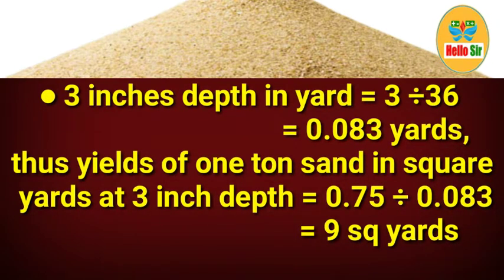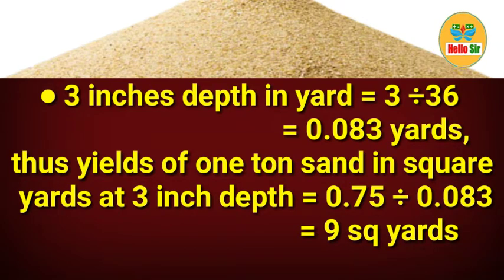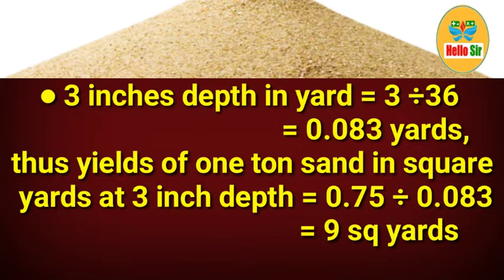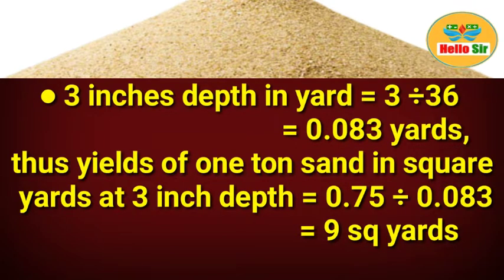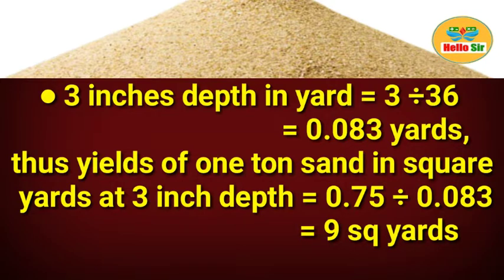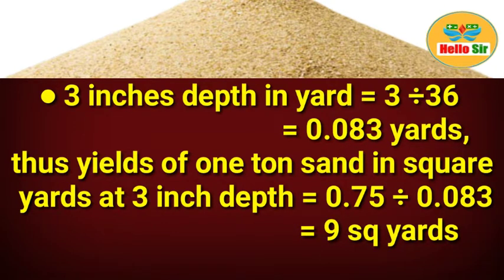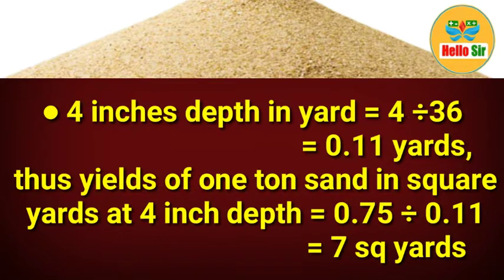For a 3-inch depth in yards: 3 divided by 36 equals 0.083 yards. Thus, the yield of one ton of sand in square yards at 3-inch depth is 0.75 divided by 0.083, which comes out to 9 square yards.